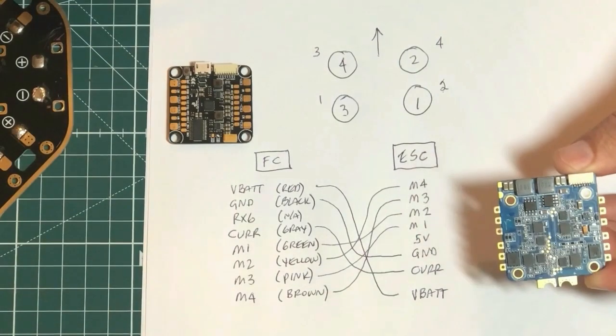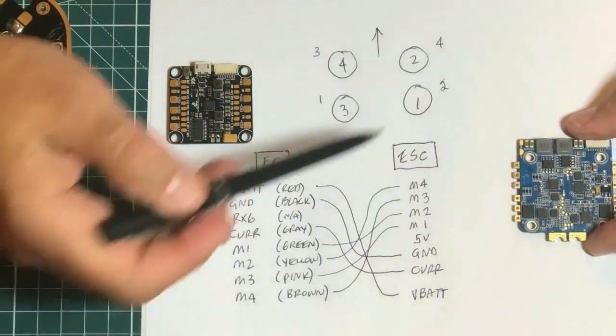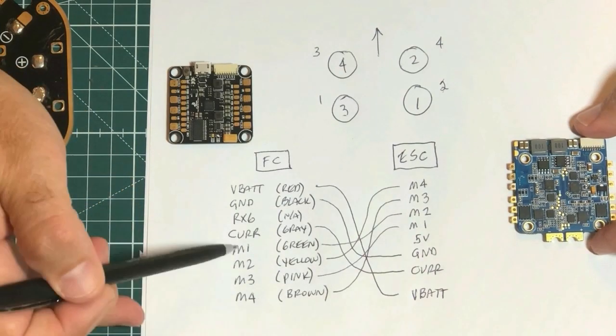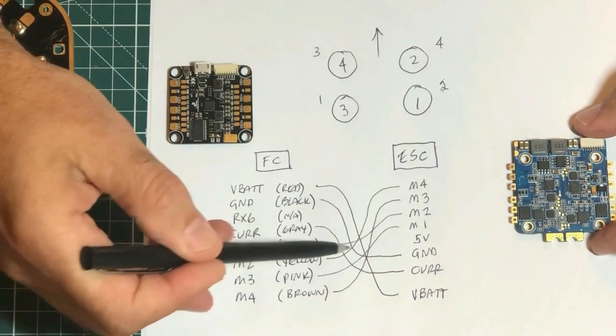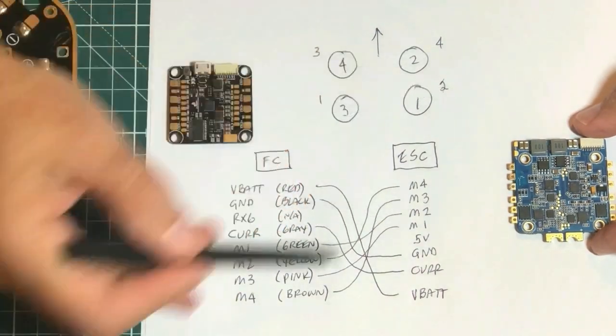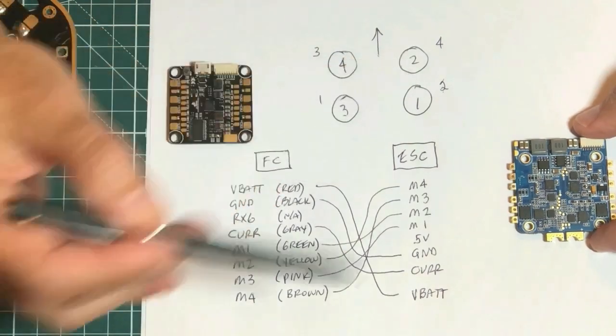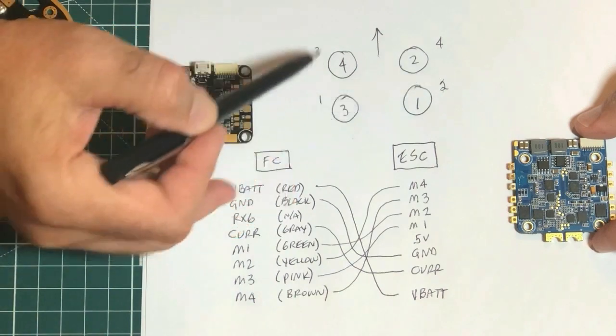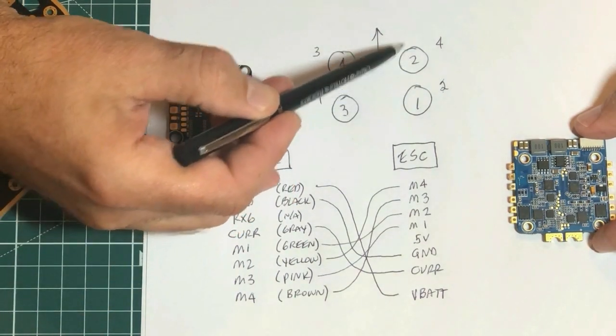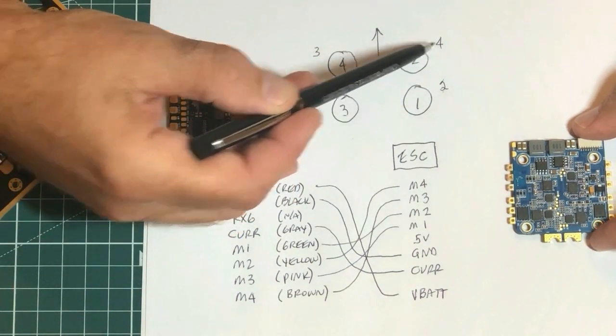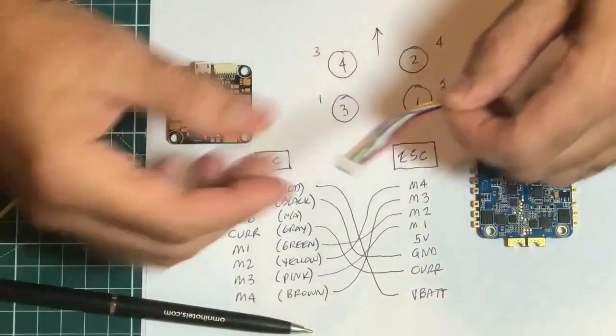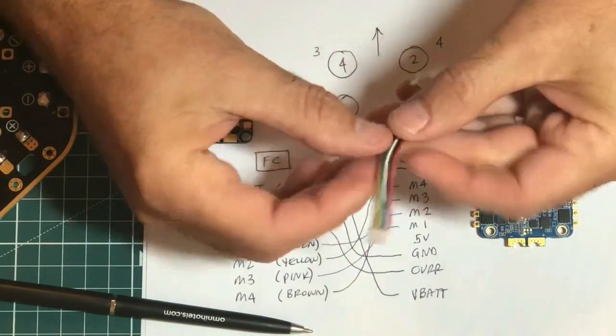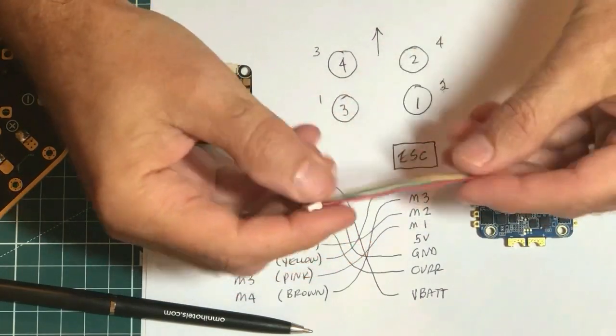So I'm going to fix that in the wiring by rewiring so that motor one of the flight controller is going to motor two of the ESC, motor one of the flight controller is going to motor four of the ESC, and so forth. And I'm going to do that by taking the wires out of the connector and then repinning them appropriately.